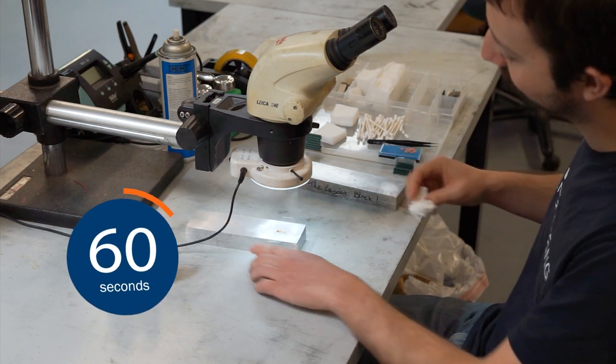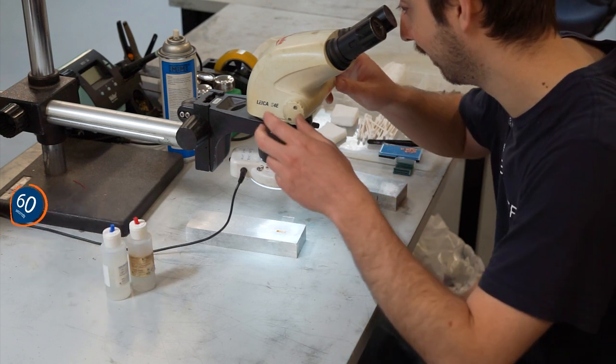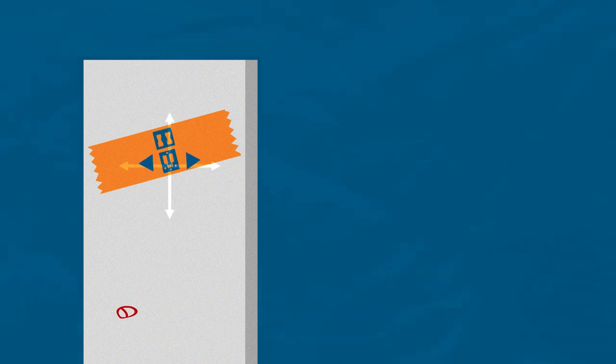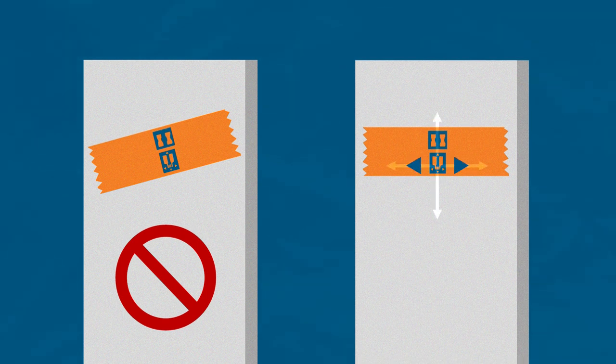After waiting 60 seconds, verify the accuracy of the gauge placement under the microscope. If the gauge shifted during placement, remove with a thin blade and start again from surface cleaning. If the gauge has not shifted and there are no visible bubbles beneath the gauge, then it is good to use.